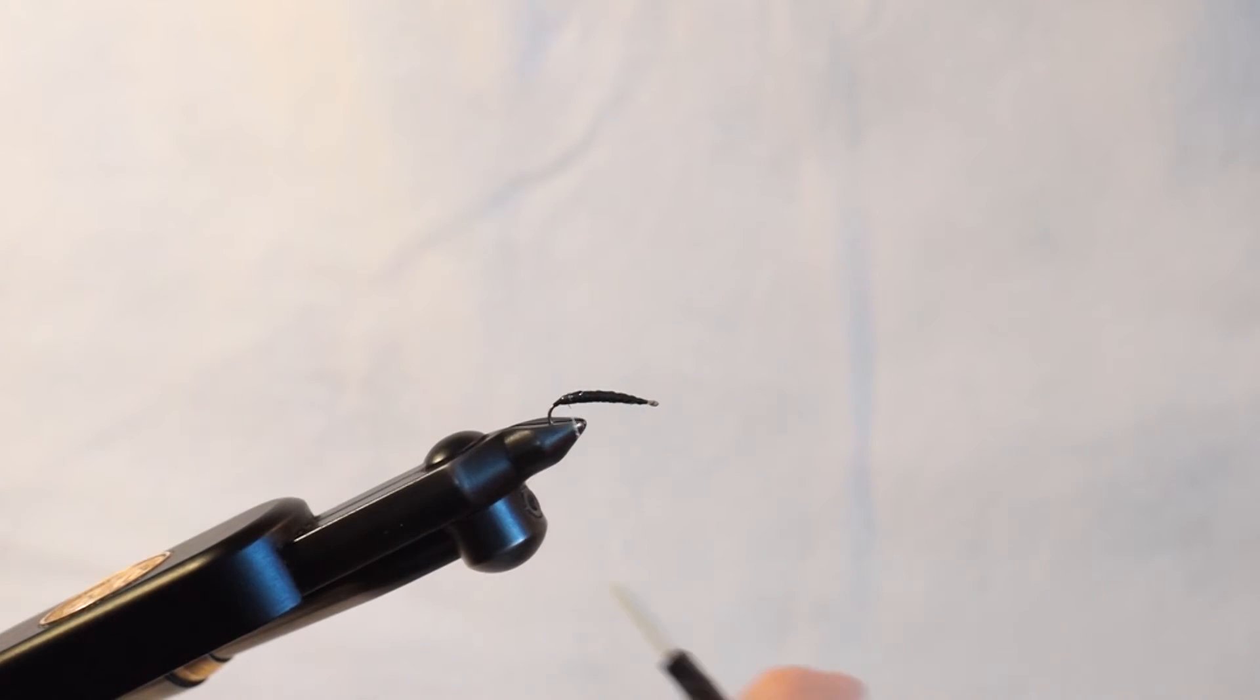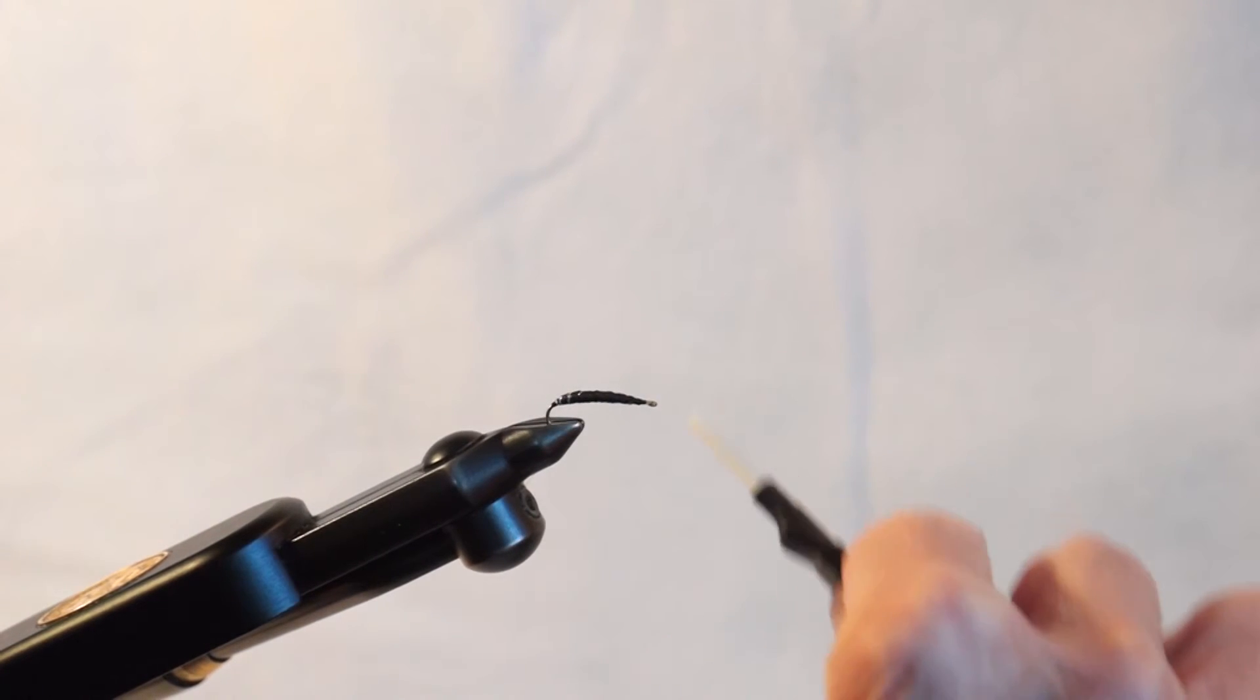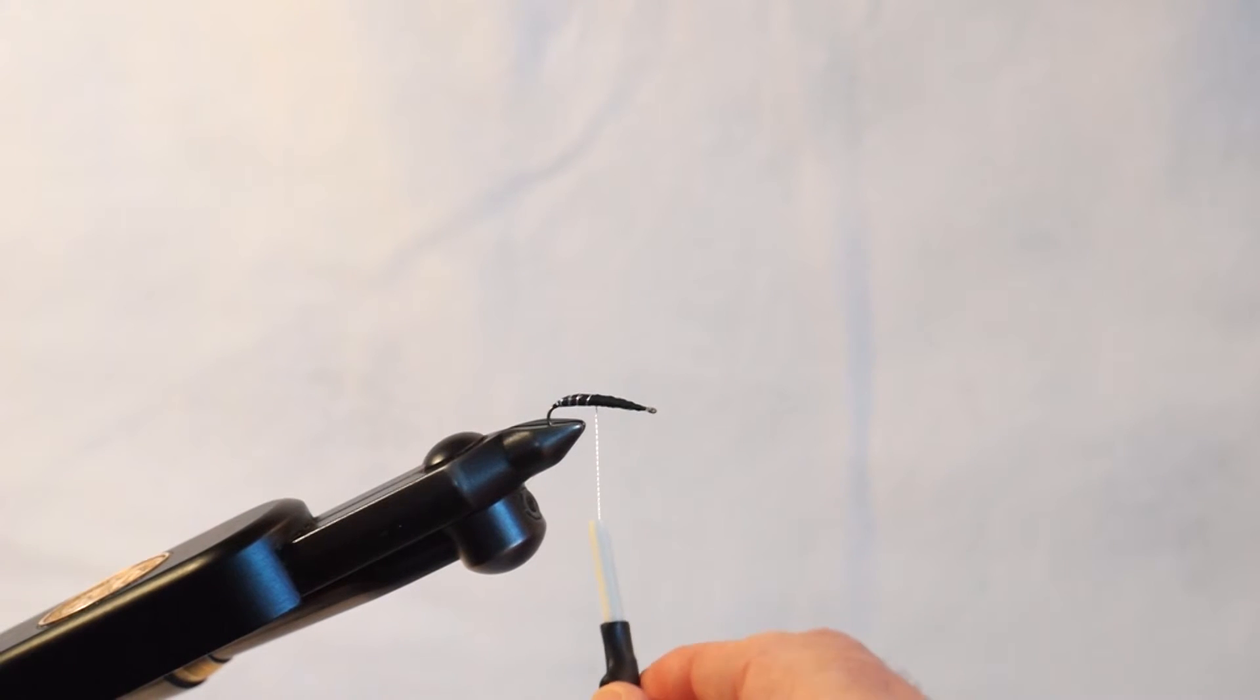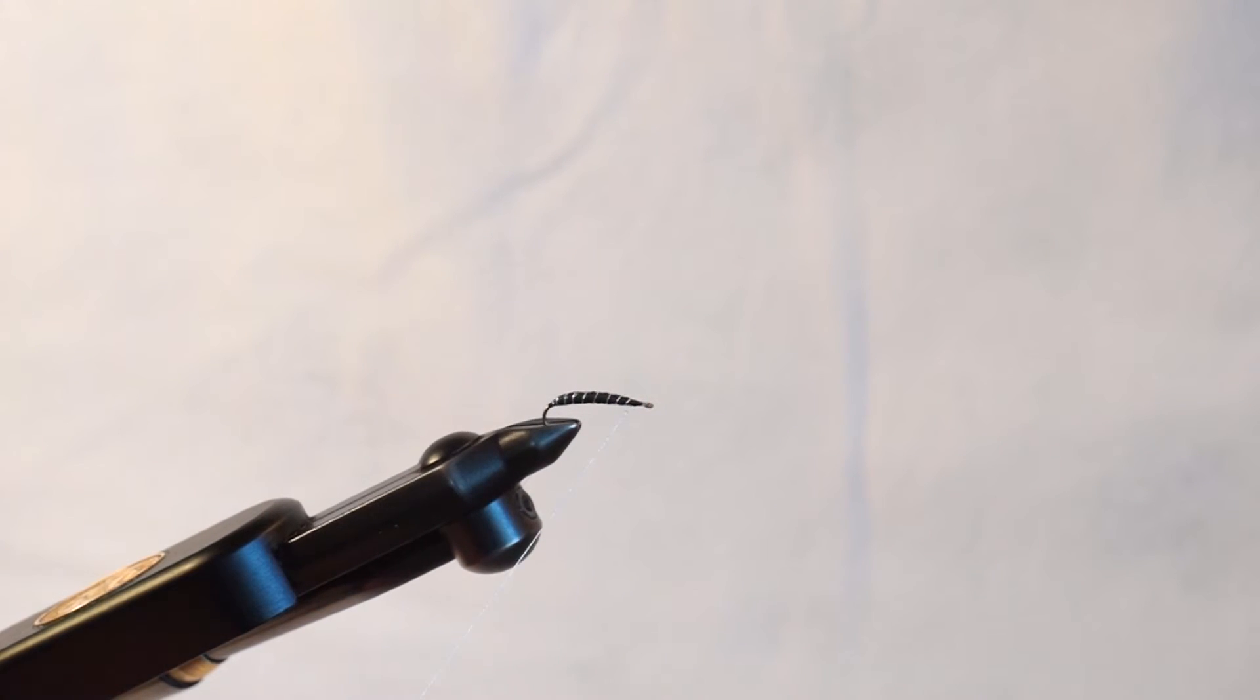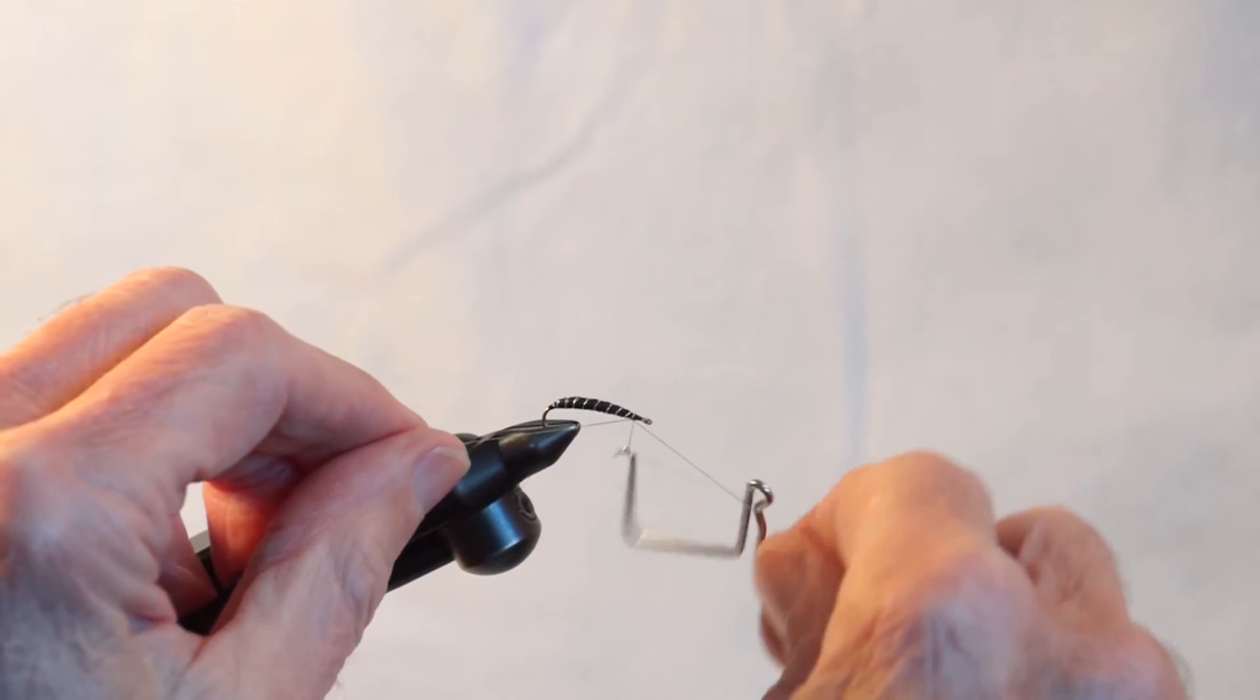For really tiny flies, if your ribbing material is on a spool, you can use a bobbin to wrap it. It's very precise. Be sure you don't break it. When I get here to the front with the thread material, I can actually secure it.